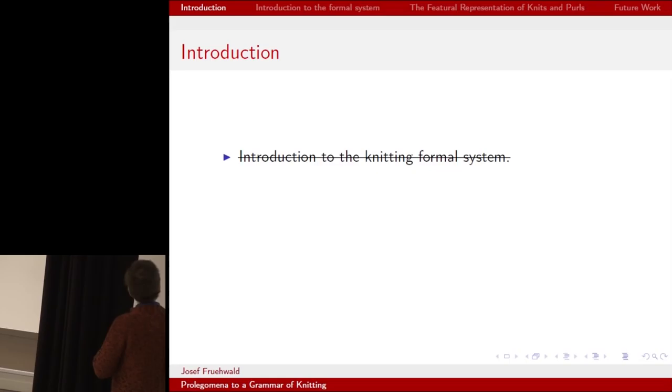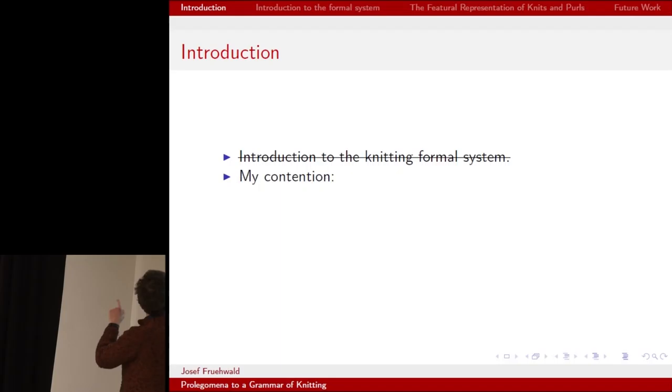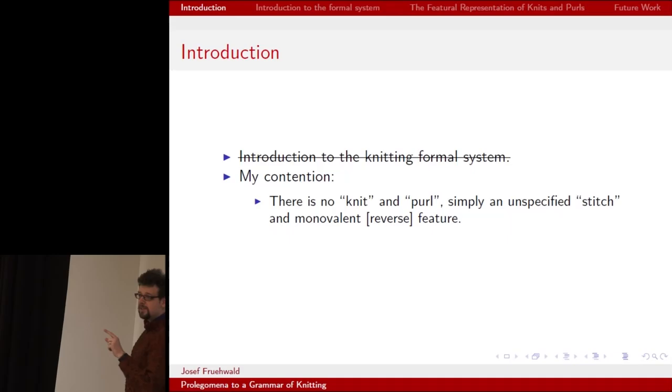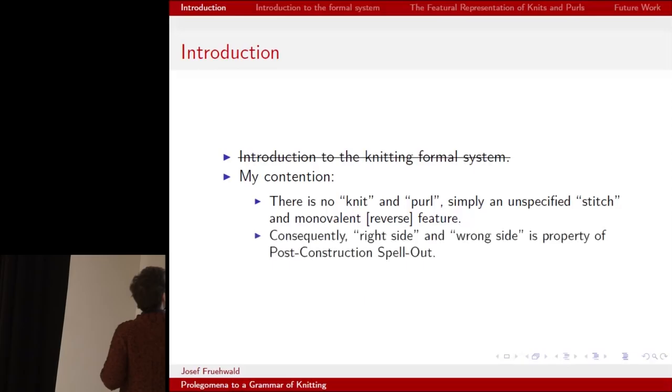I've had to cut most of the content due to time constraints. I have 20 slides and only three minutes to get through this. So I'm cutting out the introduction to the knitting formal system and skipping to my main contention that there is no knit and purl in the formal system of knitting, just a singular unspecified stitch and a monovalent reverse feature.